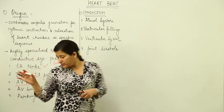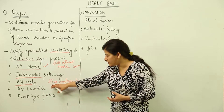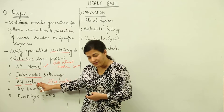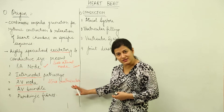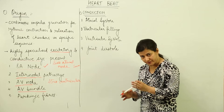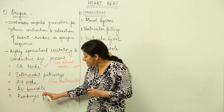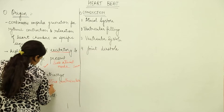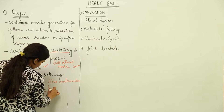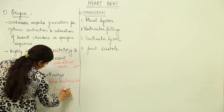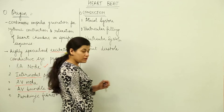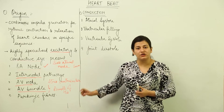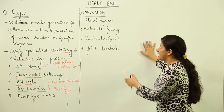The AV node is located near the ventricles as well. Between the two nodes — SA node and AV node — we have internodal pathways. From the AV node arises the AV bundle, which passes through the interventricular septum. This AV bundle then bifurcates into Purkinje fibers present in the ventricular walls. The AV bundle is also known as the bundle of His — some authors refer to the Purkinje fibers as part of the bundle of His, while others refer to the AV bundle itself.